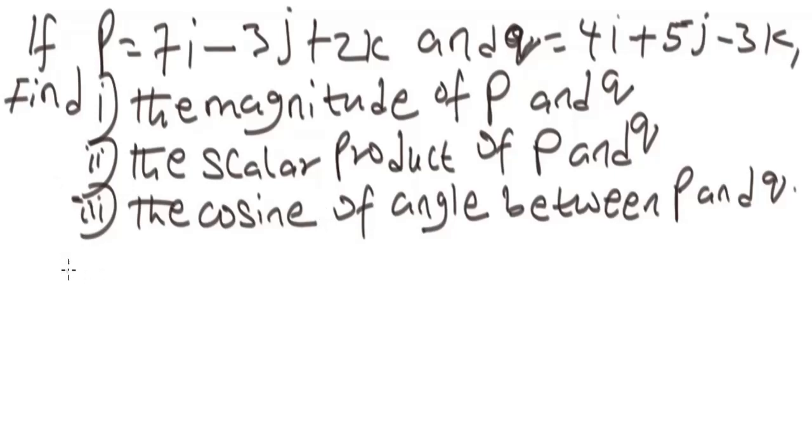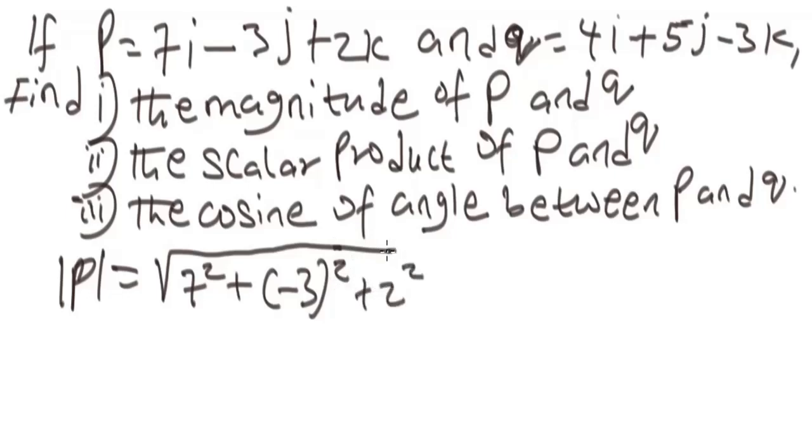The magnitude of the vectors will be, we are finding the absolute value. It will be the magnitude of P equals square root of the square of the i, j, k values. So, the magnitude of vector P would be square root of 7 square, plus minus 3 square, plus 2 square.